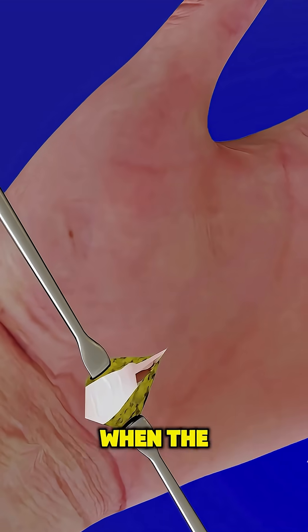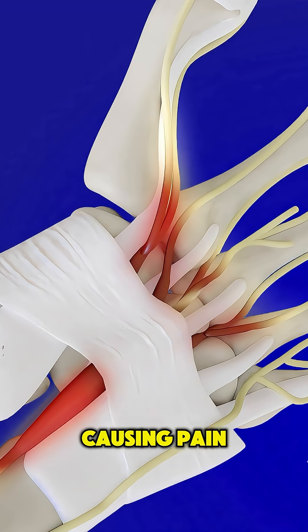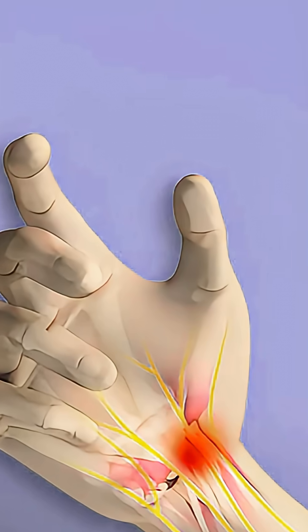Carpal tunnel syndrome happens when the median nerve in your wrist gets compressed, causing pain, tingling, or weakness in the hand.